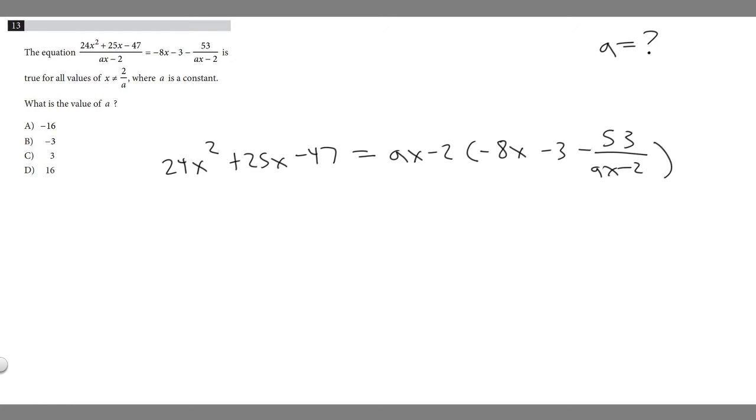And so if we go ahead and do that let's start with this part right here. So we have minus 8x minus 3 times ax minus 2. So minus 8x times ax is going to be minus 8ax. And then we do minus 8x times minus 2 which is plus 16x.